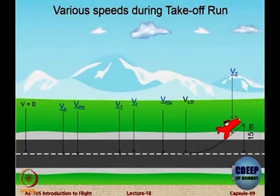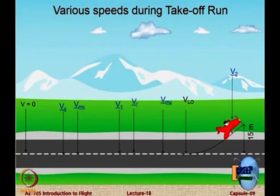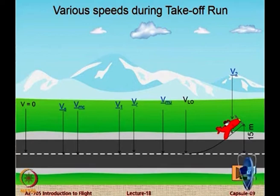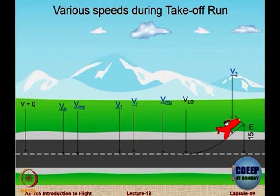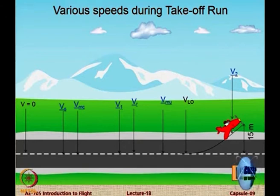This is a very important slide showcasing many speeds, each with significant meaning. Starting from V = 0, the speeds in sequence are: V_S (stall speed), V_MC (minimum control speed), V_1 (decision speed), V_R (rotation speed), V_mu (minimum unstick speed), V_LOF (lift-off speed), and finally V_2 (takeoff safety speed). The pilot must remember the numerical value of all these speeds for every flight.